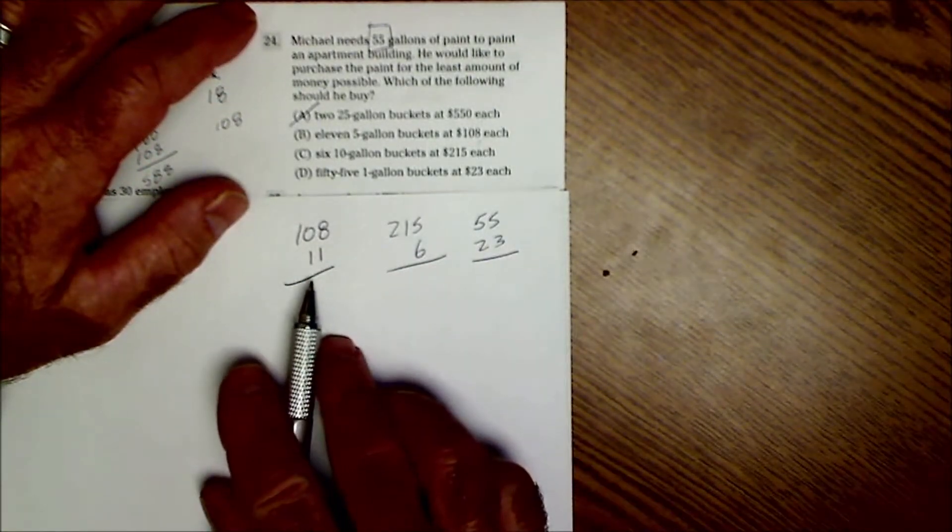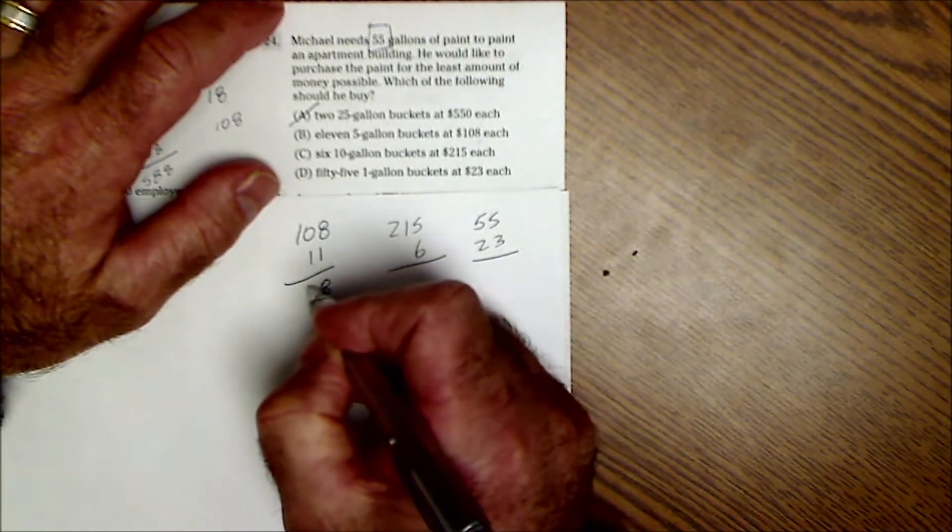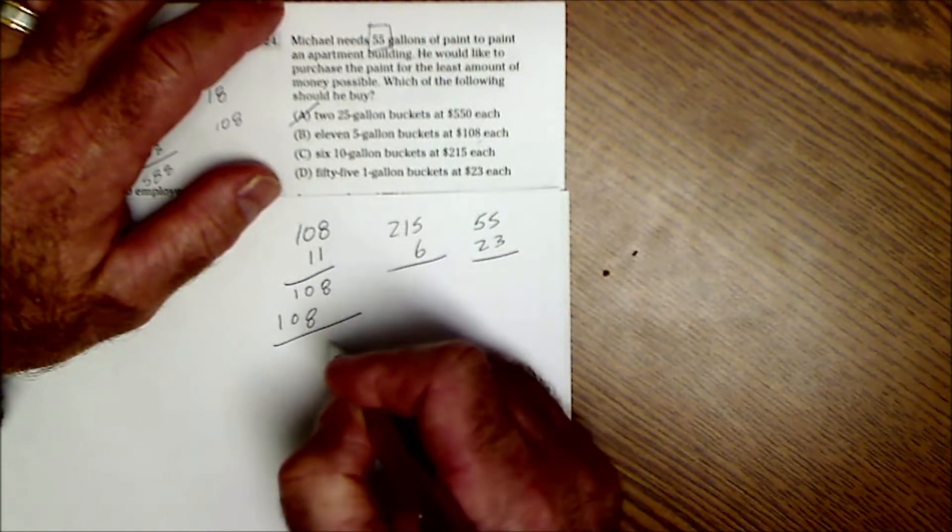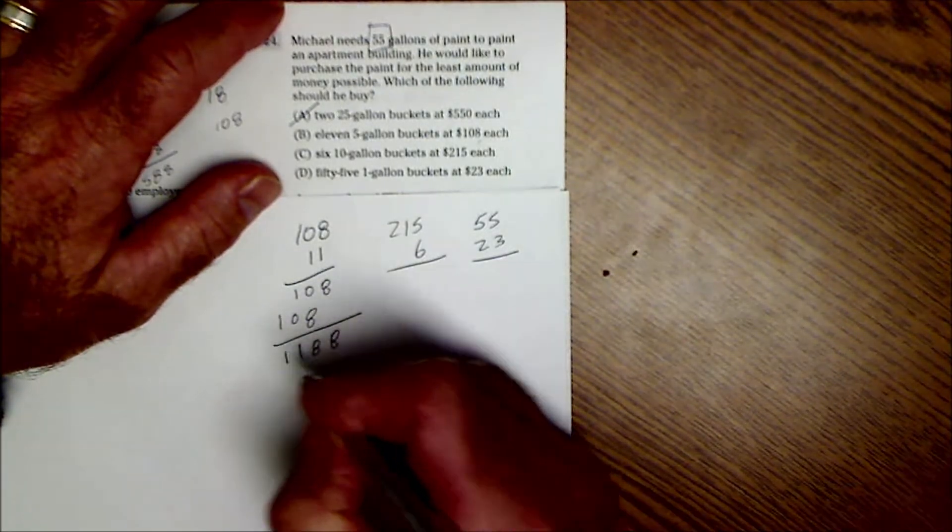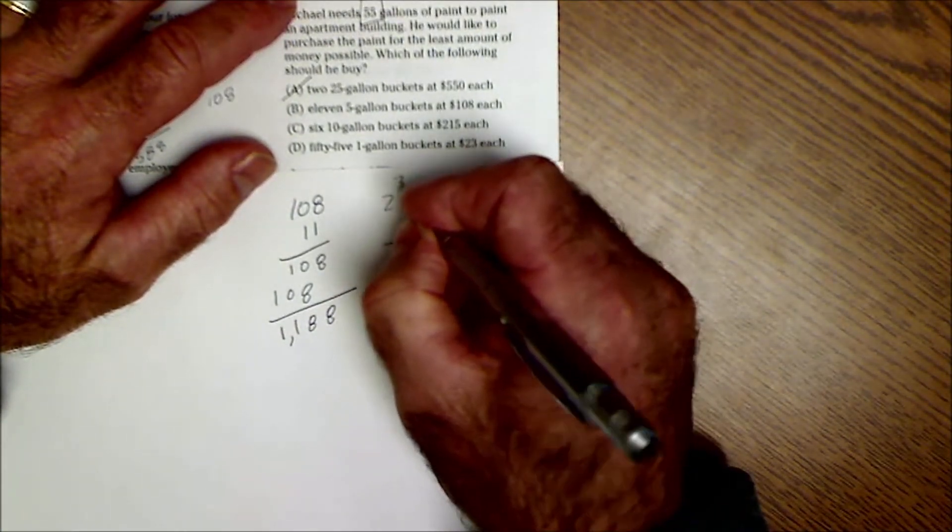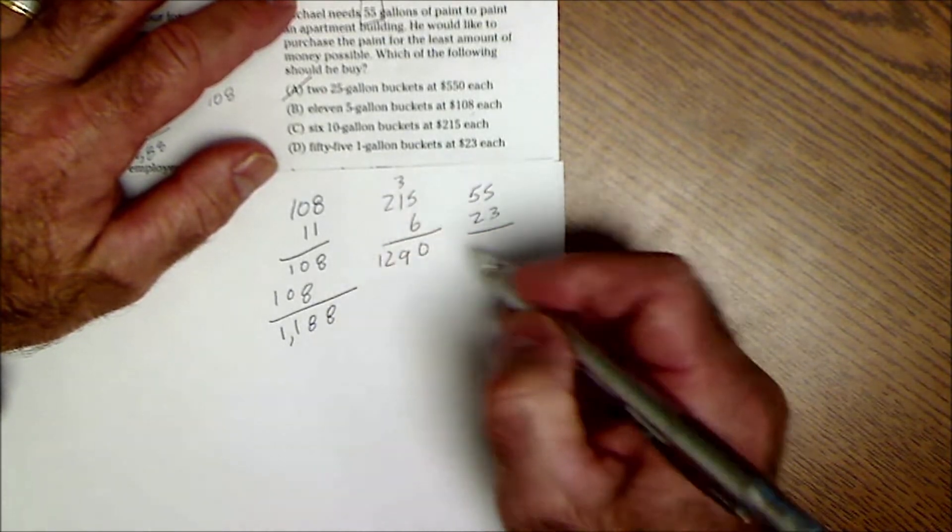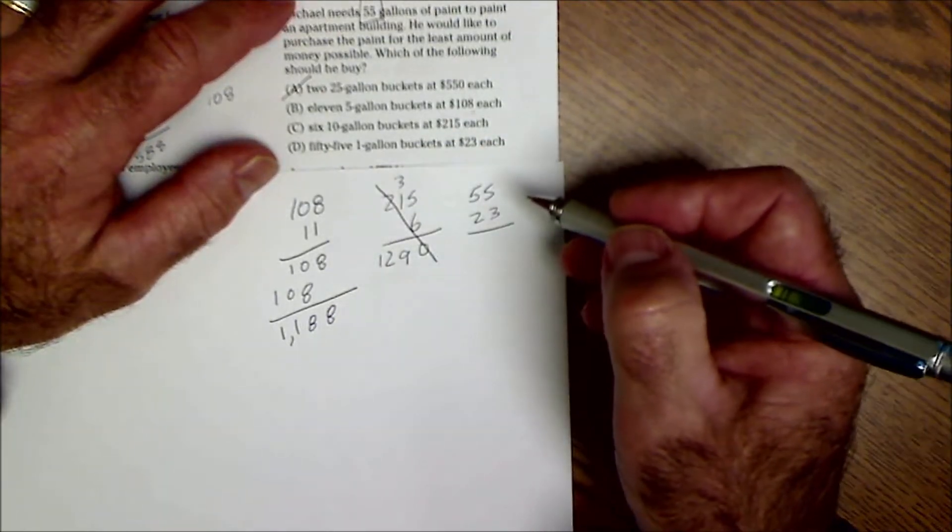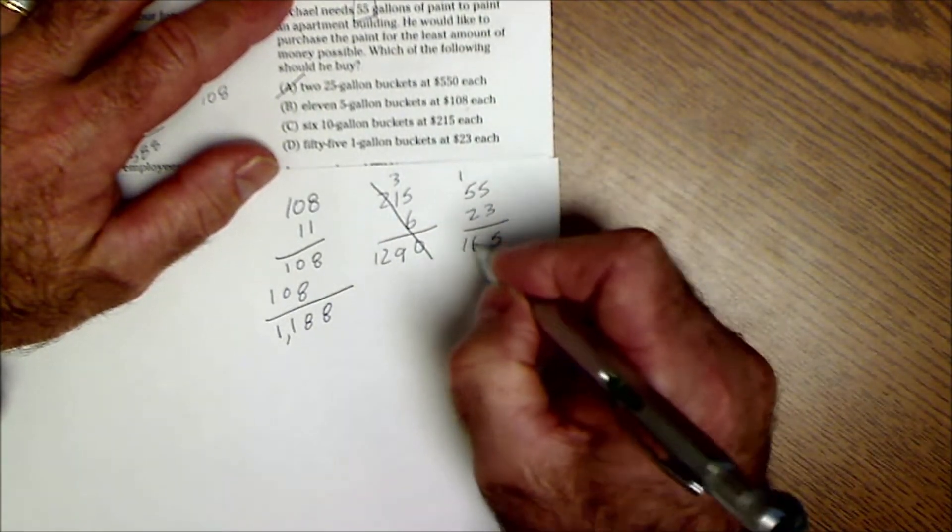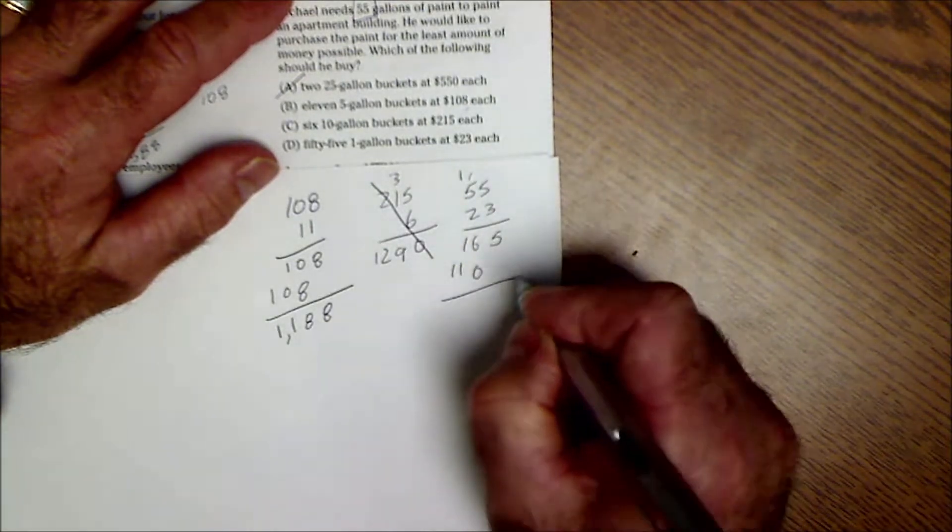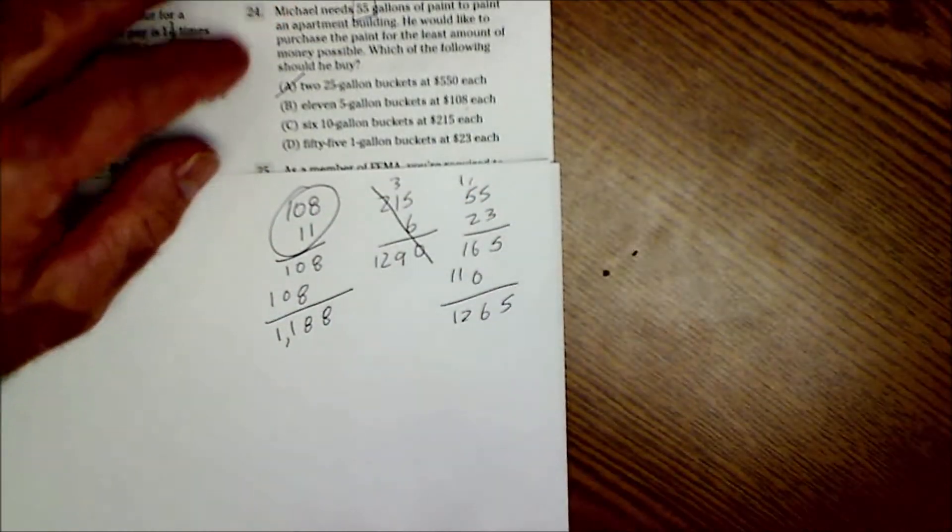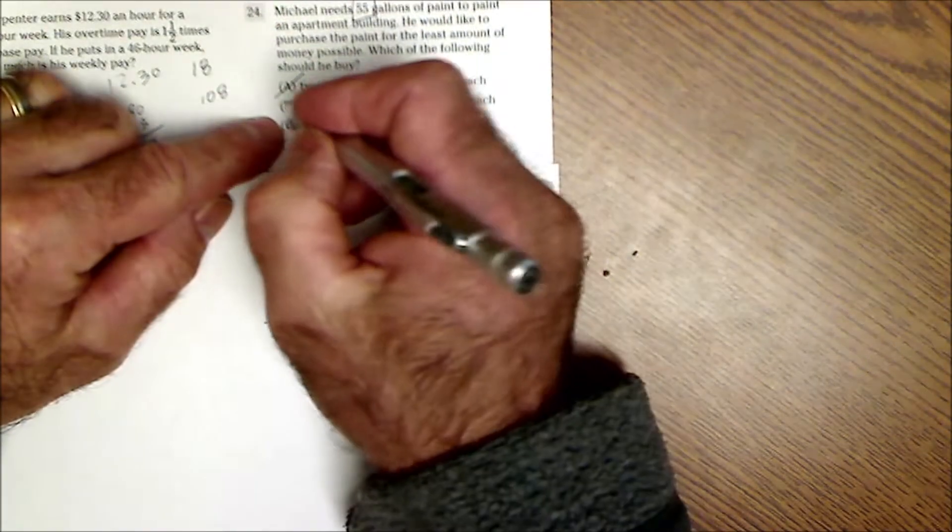I'm going to start here and see if this is going to work. I got 801 placeholder 801. I add that up to get 1188. So 1,100 bucks. This is going to be 1290. This is going to be 1265. And then I got 1188. This is the best option right here. 108 times 11. So it's B.